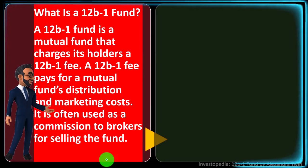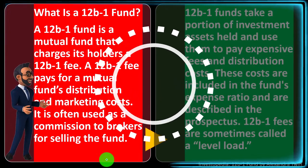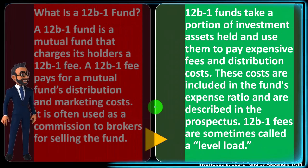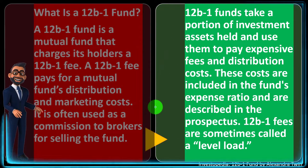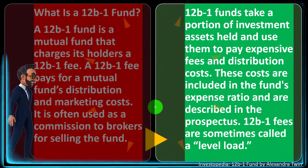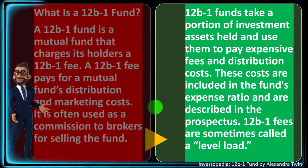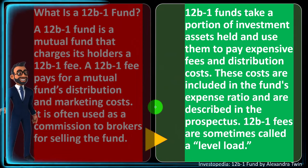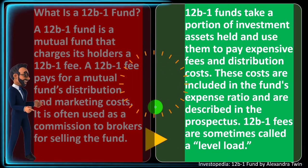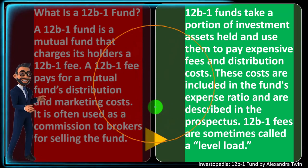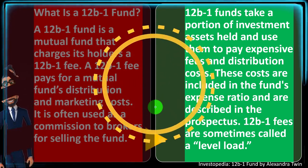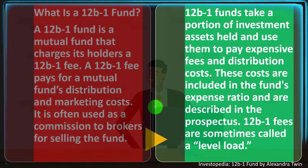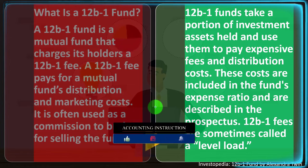The 12B1 fee is often used as a commission to brokers for selling the fund. 12B1 funds take a portion of investment assets held and use them to pay expenses and distribution costs. These costs are included in the fund's expense ratio and are described in the prospectus, which gives you details on this type of activity. The 12B1 fees are sometimes called a level load — so 'level load' is another term for the 12B1 fee.